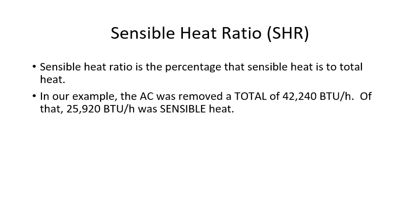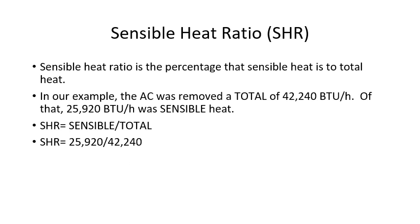In our sample unit, the air conditioning system removed a total of 42,240 BTUs. Of that, 25,920 was sensible heat. The sensible heat ratio is calculated by sensible heat divided by total heat — a very simple formula. In this case, we divide 25,920 sensible by 42,240 total heat, and we arrive at 0.61.